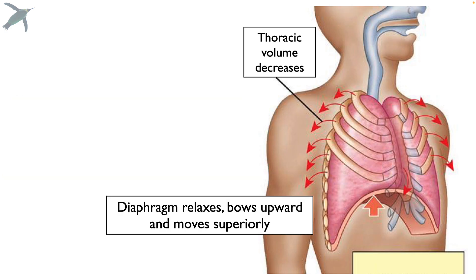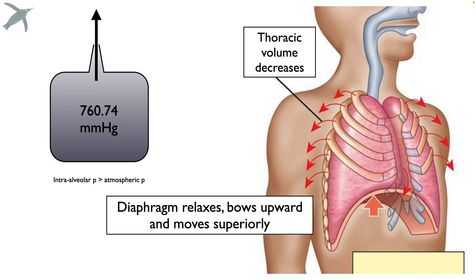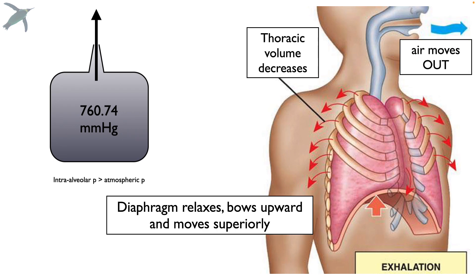On the other hand, when the diaphragm relaxes, it bows upward, causing the volume in the thoracic cavity to decrease. When that happens, the pressure of the air molecules inside goes up and air moves out.